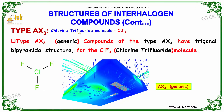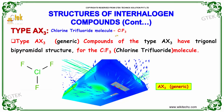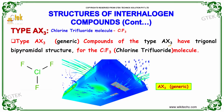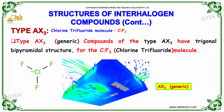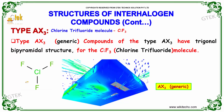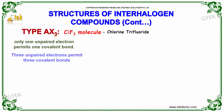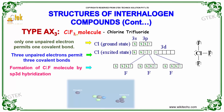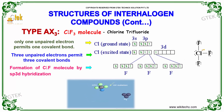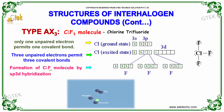For type AX3, the chlorine trifluoride molecule, ClF3, is a typical example. Compounds of the type AX3 have a trigonal bipyramidal structure. You can see the chlorine trifluoride molecule here. Three unpaired electrons permit three covalent bonds and the formation of the chlorine trifluoride molecule by SP3D hybridization.